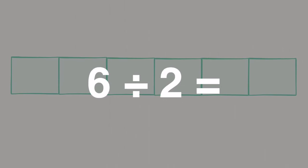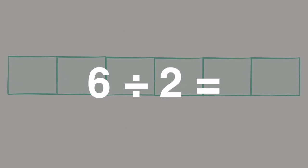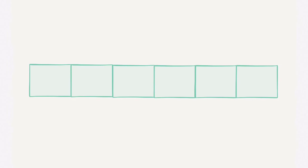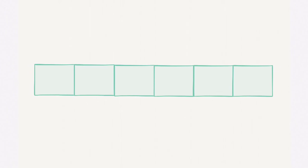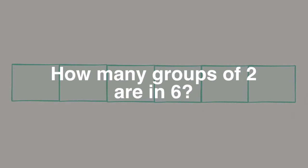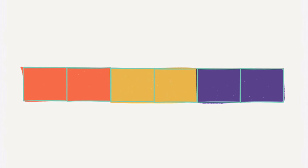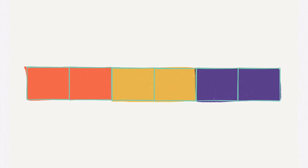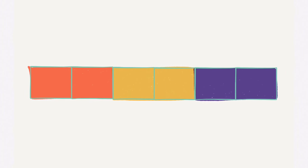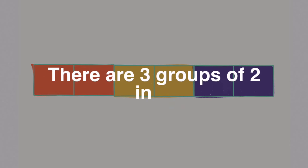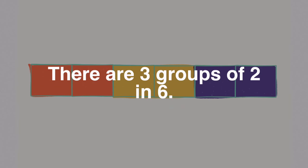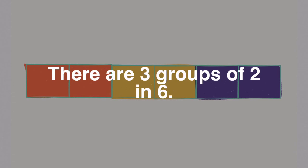Let's see what 6 divided by 2 looks like visually. Here's my 6, and we want to divide it by 2 — we want to know how many groups of 2 are in 6. I simply scoop out groups of 2 and find out how many groups there are. We see that there are 3 — orange, yellow, and purple if color-coded. There are 3 groups of 2 in 6.